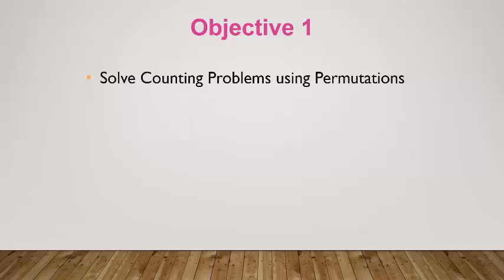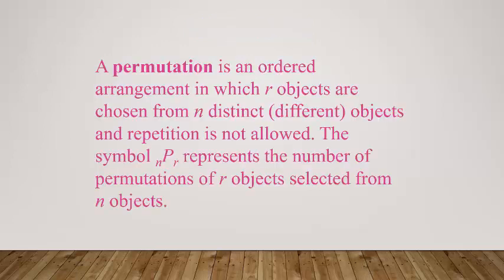So what exactly is a permutation? A permutation is an ordered arrangement in which r objects are chosen from n distinct objects, where repetition is not allowed. For example, we might have 10 objects and want to pick or arrange 7 of them.